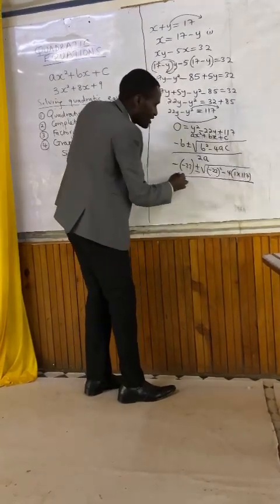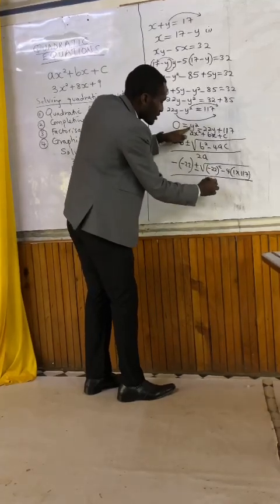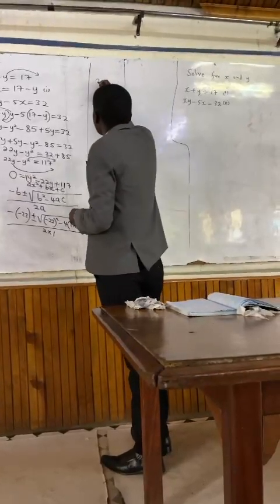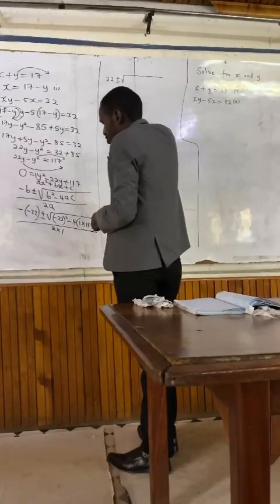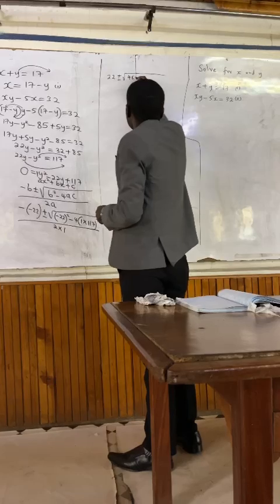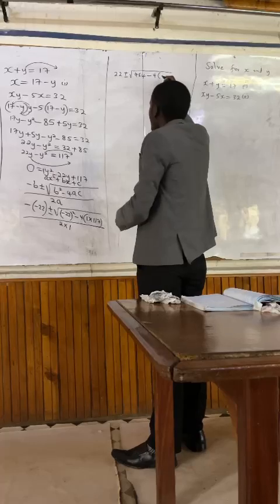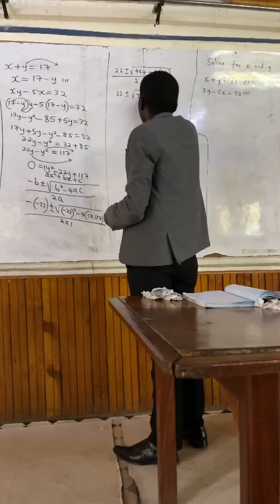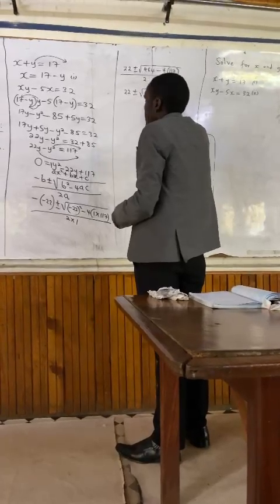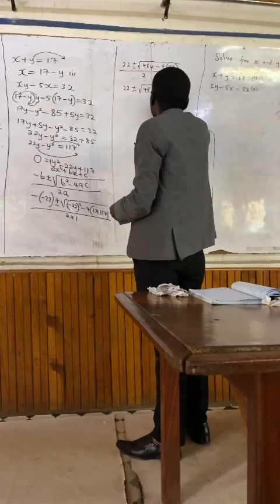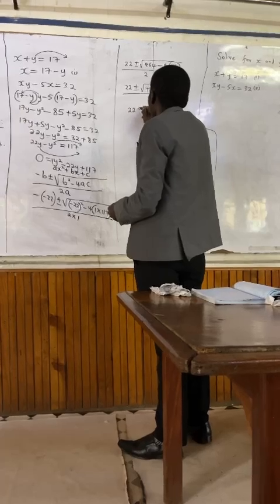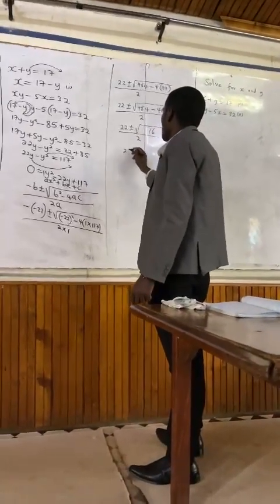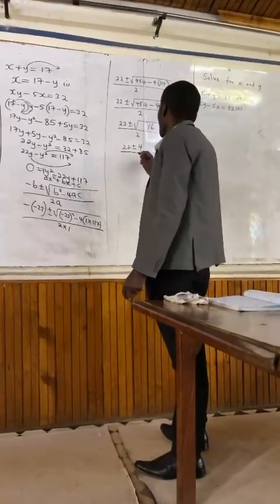And we divide everything by 2 times a, and our a is 1. So minus negative 22 gives us positive 22, plus or minus the square root of 22 squared minus 4 times 1 times 170, everything over 2. That gives us 22 plus or minus the square root of 484 minus 468, which equals 22 plus or minus the square root of 16, divided by 2. The square root of 16 is 4, so we have 22 plus or minus 4, divided by 2.